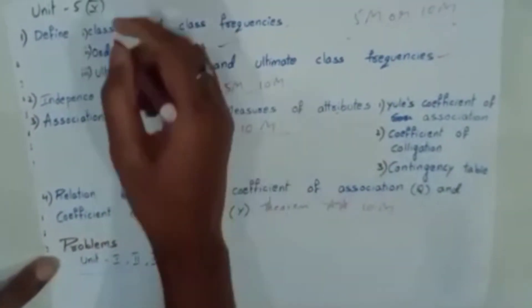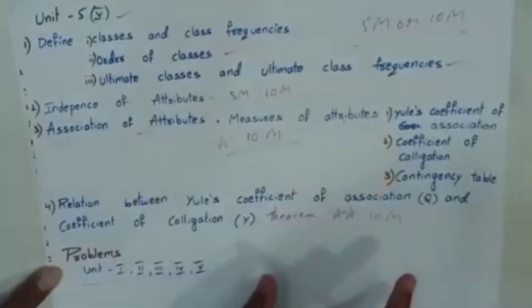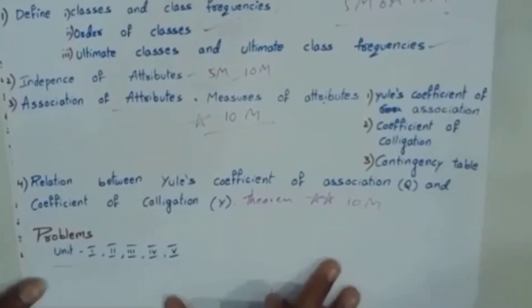And next Unit 5 Attributes, definitions and formulas prepare well. Confirm question will come from these 4 questions.